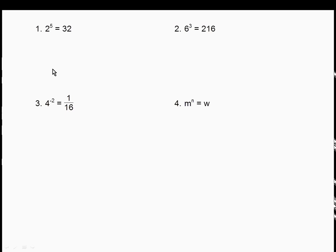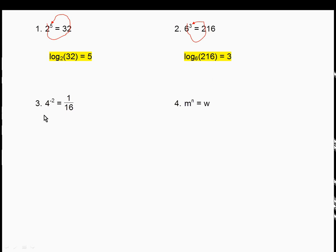We still make the same little circle, but remember to say the word log. For 2 to the 5th = 32: log base 2 of 32 = 5. For 6 cubed = 216: log base 6 of 216 = 3. For 4 to the negative 2 = 1/16: log base 4 of 1/16 = negative 2. For m to the n = w: log base m of w = n. In each case, bases match, the exponent is what the log equals, and the remaining value is what you're taking the log of.